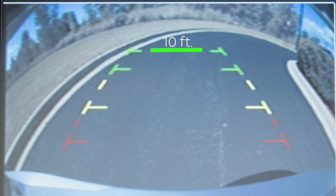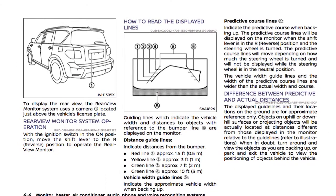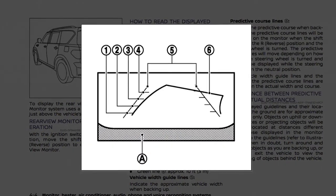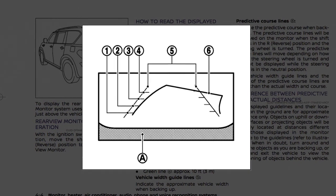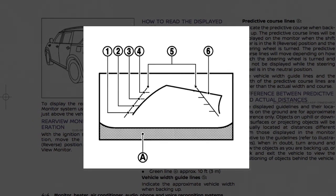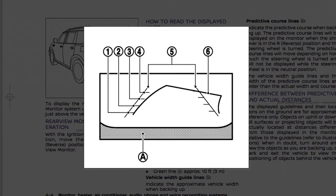And if so equipped, the second green line designates an object is approximately 10 feet away. When the steering wheel is turned, predictive course lines are also displayed on the screen. These lines show the approximate path the vehicle will take, and they move in conjunction with how far the steering wheel is turned.